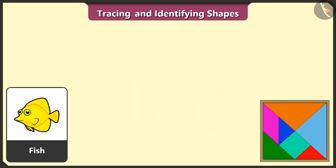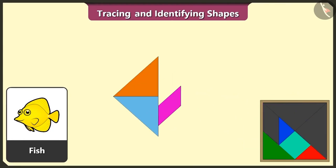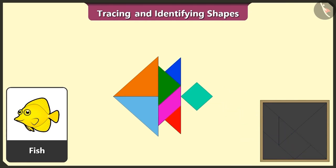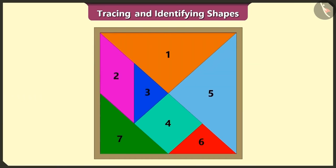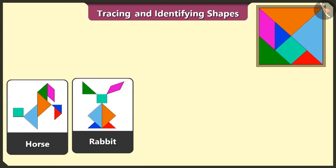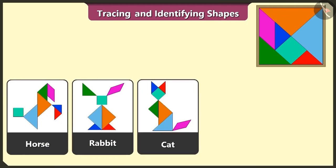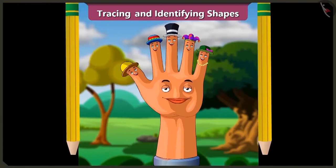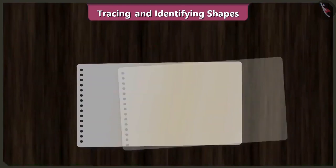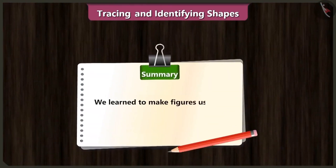This is a fish. Let's try and create a fish using 2 triangles, 1 quadrilateral and 1 triangle, 2 more triangles and 1 square — and we have created a fish. We have finally created a horse, rabbit, cat, swan and a fish using the 7 shapes of the tangram. Friends, today we learned to make figures using shapes of a tangram in an interesting way.